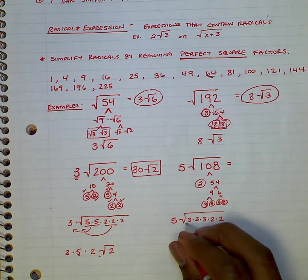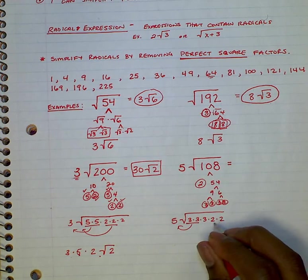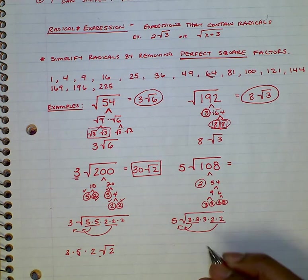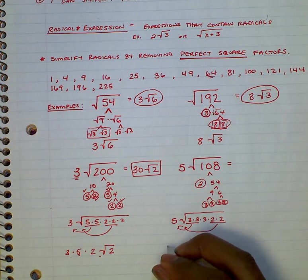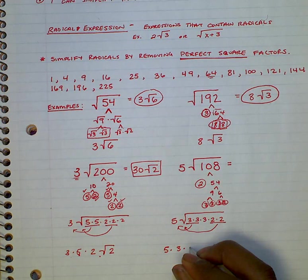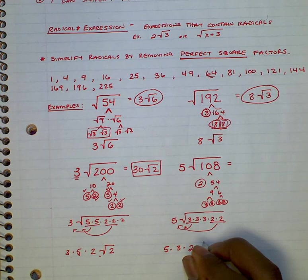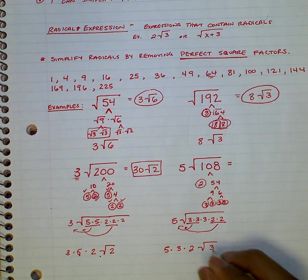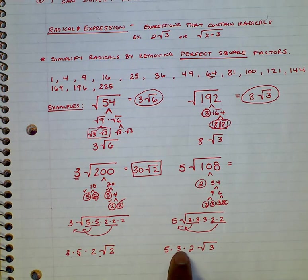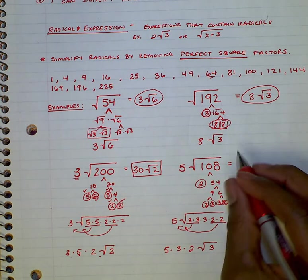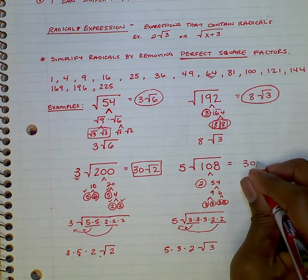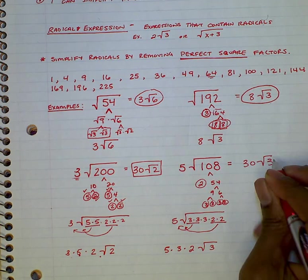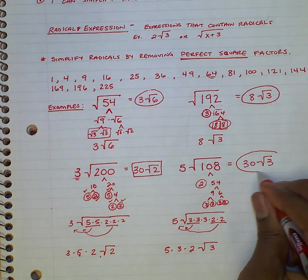Then I take out my pair. Got a pair of 3s. Got a pair of 2s. So 5 times 3 times 2. Put this 3 inside. 5 times 3 is 15, times 2 is 30. That's 30 radical 3. I didn't expect those to be such close numbers.